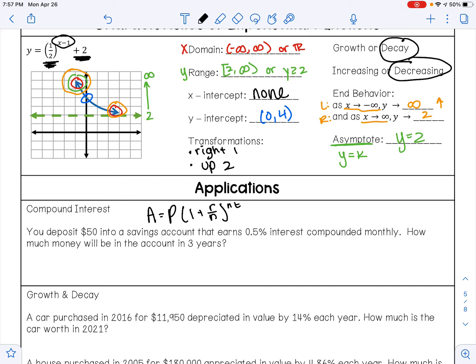It says you deposit $50 into a savings account that earns 0.05% interest compounded monthly. How much money will be in the account after three years?